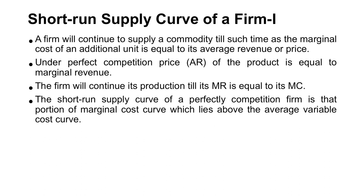The short-run supply curve of a perfectly competitive firm is that portion of the marginal cost curve which lies above the average variable cost curve. The portion of the MC curve above the average variable cost curve is known as the supply curve of the firm in short-run perfect competition.